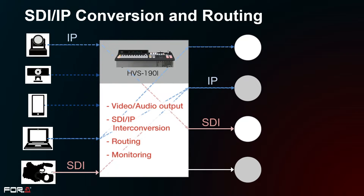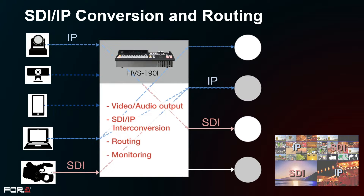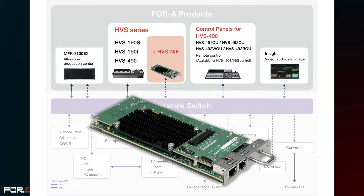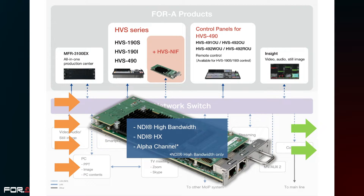All SDI/IP material and outputs can be housed in the built-in multi-viewer and monitored via MOIP. The HVS NIF option can be expanded to support NDI to build a low-cost IP system. The HVS NIF supports NDI HX input/output, and each HVS NIF has two one-gigabit Ethernet ports supporting four inputs and two outputs. It also supports high bandwidth NDI and alpha channel. In addition to PTZ cameras and smartphones, the HVS 190 can be combined with our NDI compatible video router and media server.